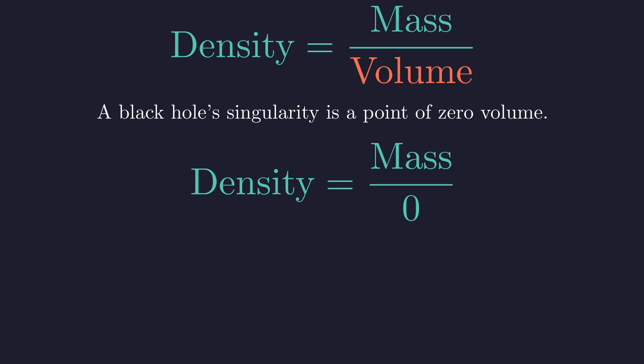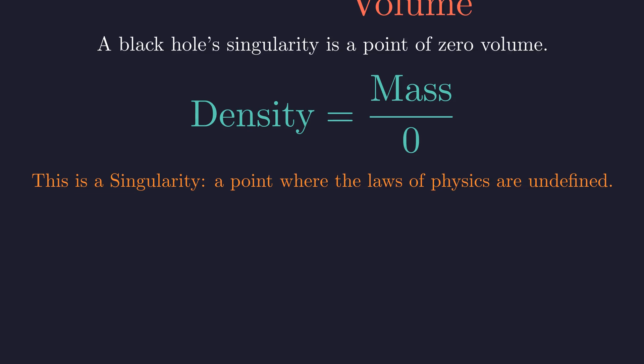This isn't just a mathematical curiosity. In physics, division by zero marks a singularity, a point where our current theories completely break down, where the equations we use to describe reality give nonsensical results. It's the mathematical equivalent of a frontier we have yet to cross, a boundary at the edge of human knowledge.